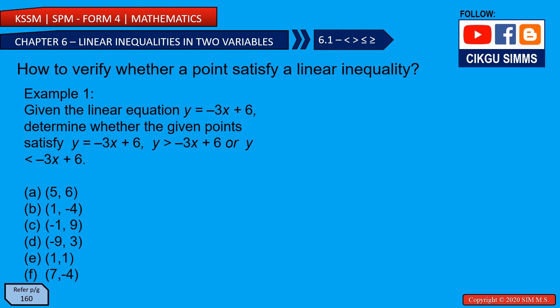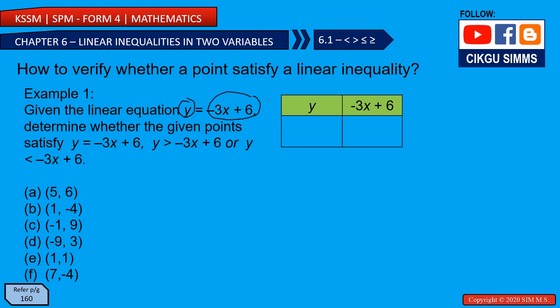Now we have a simpler method — the substitution method. We use the same equation y = -3x + 6. We substitute the coordinate values and then check: is the left side equal to, greater than, or smaller than the right side?